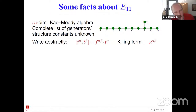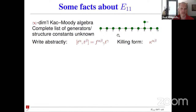E_{11} is an infinite-dimensional Kac-Moody algebra defined by generators and relations, which means you know it exists and know some of its properties, but you cannot, for example, write down all possible generators explicitly or know the structure constants in detail. Here you see the Dynkin diagram, which defines the algebra. We know there are generators T_alpha, infinitely many of them with some structure constants, but there is no simple formula for them. We know this algebra has a non-degenerate Killing form.